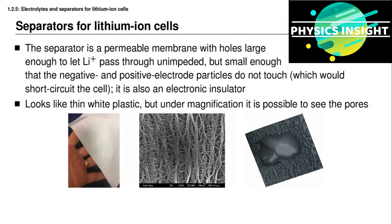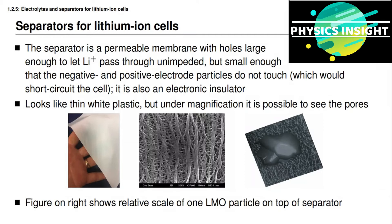The image on the left shows a separator material used in some lithium-ion battery cells. To the unaided eye it looks just like a thin sheet of white plastic — you can even see fingers through the material, it's that thin. But if you look at it under magnification, as shown in the center image on this slide, you can see tiny pores between the fibers of the material. The pores are large enough for ions to pass through but small enough that electrode materials cannot contact each other. The photograph on the right shows a scanning electron microscope image of a single particle of lithium manganese oxide on top of a separator to illustrate the relative scale — the pores are much, much smaller than a particle, so particles on either side will not contact each other, but ions can still flow through the pore openings.